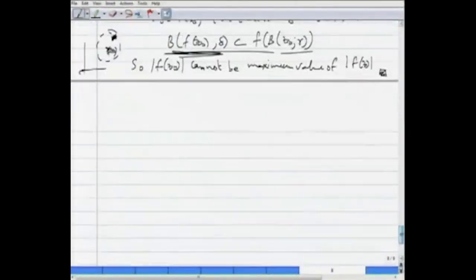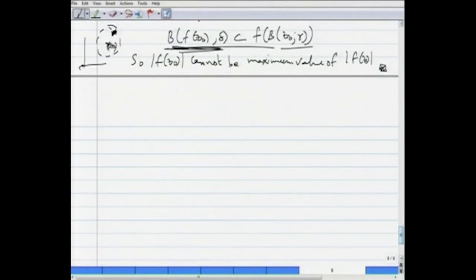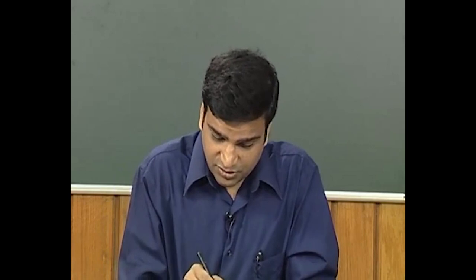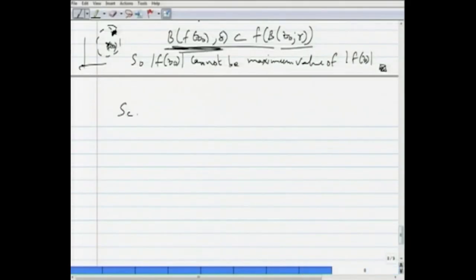So the maximum modulus principle follows easily from the previous theorem. Notice that while I am calling these consequences of the open mapping theorem, the hard work is captured in that fundamental theorem. The open mapping theorem is actually the fundamental idea behind all of these results. Now we can prove the Schwartz lemma, which is an important consequence of the maximum modulus theorem.